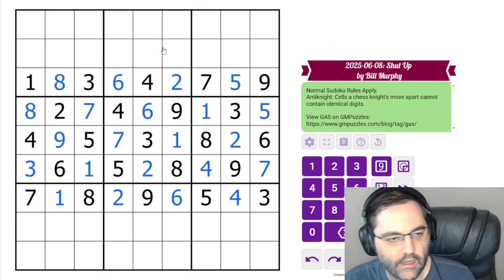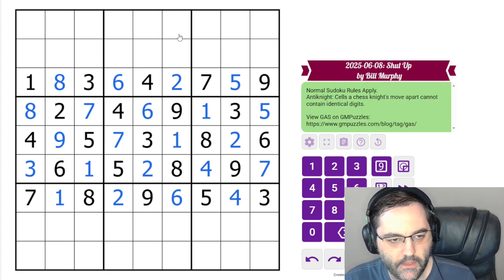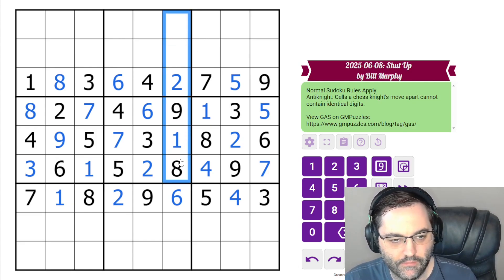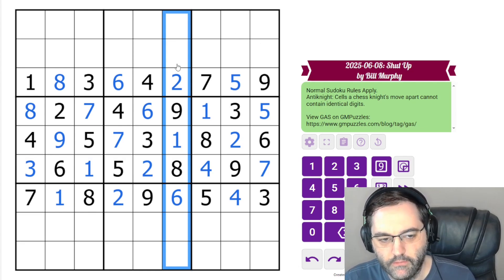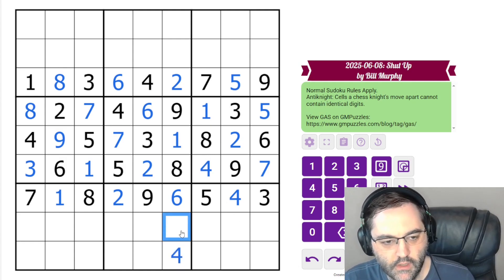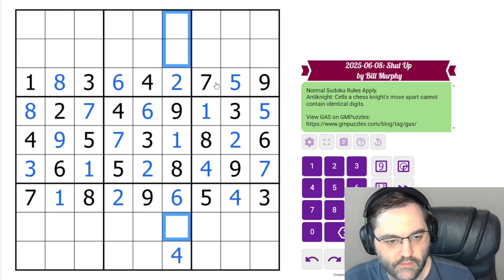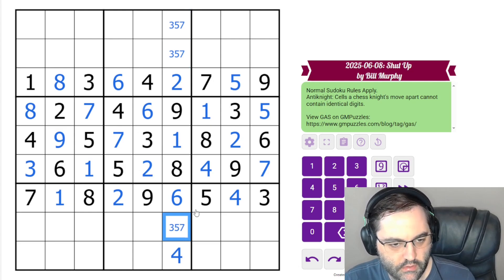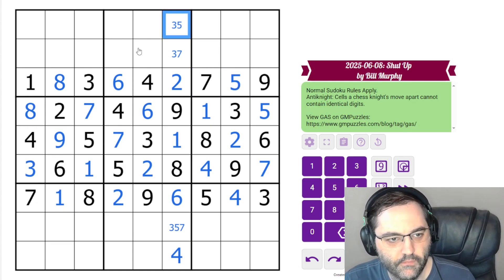Two can't go here, and six can't go here, so this is the four. And then six, two. So that gets us all of the middle five rows. And now I slowed way down in my test solve here. There are quite a few singles to find. It really just depends on what order you find them in.